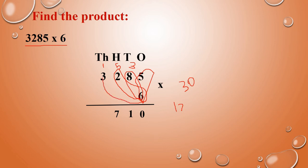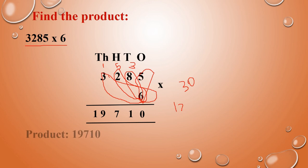At last, you have to multiply with the thousands place. Here 3 is this digit. 3 into 6 — 3 sixes are 18. 18 plus 1 carry, that is 19. As such you can do. So the answer is 19,710.